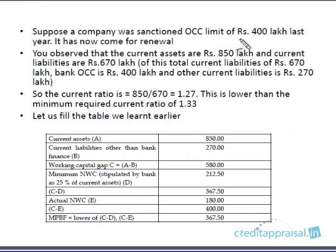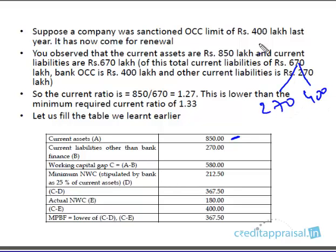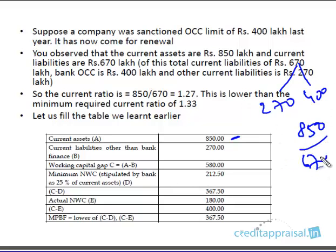Suppose a company was sanctioned a CC limit of 400 lakhs last year, and it has now come for renewal or enhancement. You observe that current assets are 850 lakhs and current liabilities are 670 lakhs. Out of this 670 lakhs, 270 is all other current liabilities and 400 is the bank loan — the CC limit which was sanctioned. So out of total current liabilities of 670, 400 lakhs is bank finance and 270 is other current liabilities.